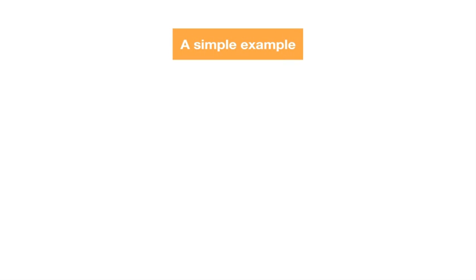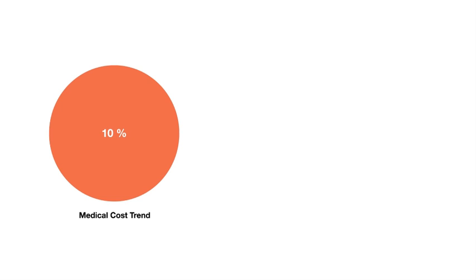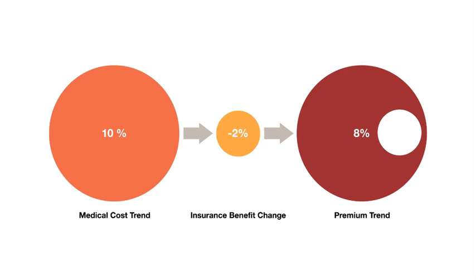Let's walk through a simple example. Suppose the projected medical cost trend is 10%. An insurance company then decides to increase the plan's deductible, a change that means consumers may pay more out of pocket when they seek care, but cuts down on the premium they are charged by 2%. What is the resulting premium trend? 10% minus 2% results in an 8% premium increase.